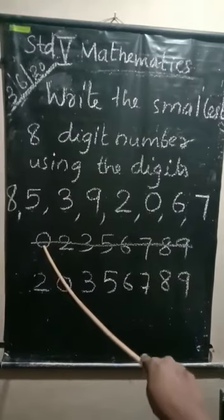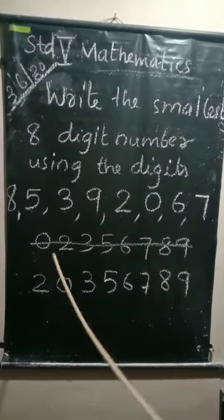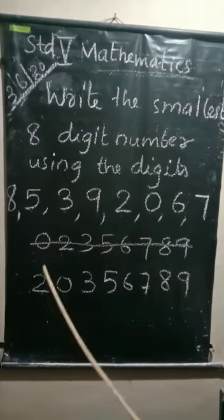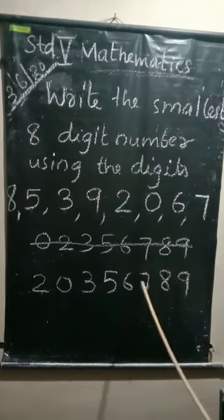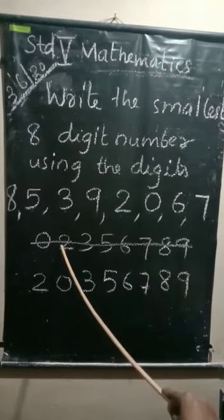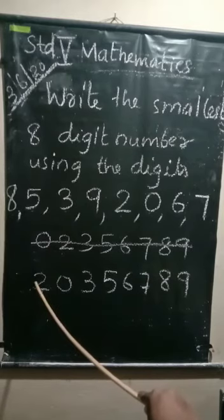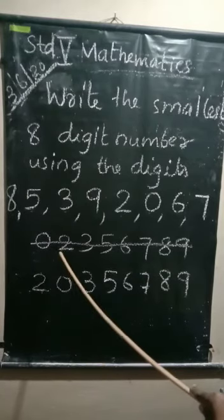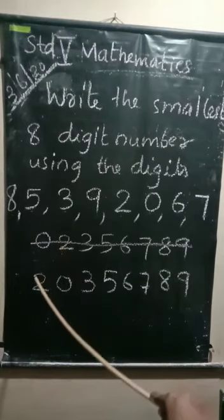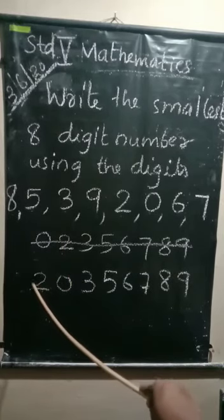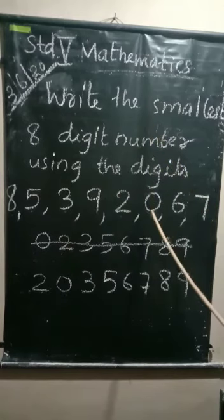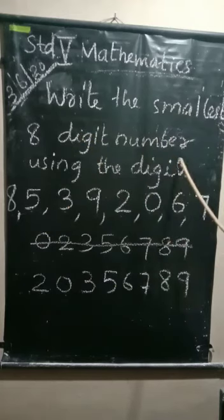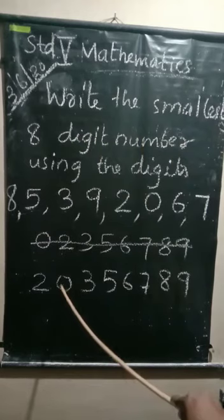See, the ascending order of the given digits — the first digit is zero. We know that zero is never written in the extreme left place. So you should write the second digit as the first digit in the number, then zero in the second position. If zero is in the given digits and you are asked to write the smallest number, zero is placed in the second position.